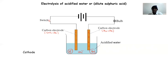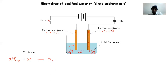When we close our switch, the positively charged ions will move towards the cathode, which is negatively charged, because opposite charges attract. When the hydrogen ions reach our cathode, they pick up electrons and get discharged. Each hydrogen ion picks one electron to form a hydrogen atom. Since hydrogen is a diatomic molecule, we need two hydrogen ions picking up two electrons to form hydrogen gas. This is the equation for the reaction at the cathode.